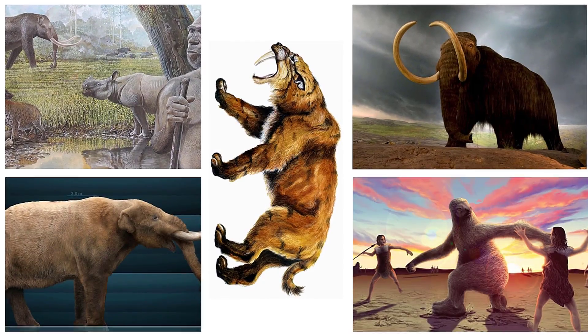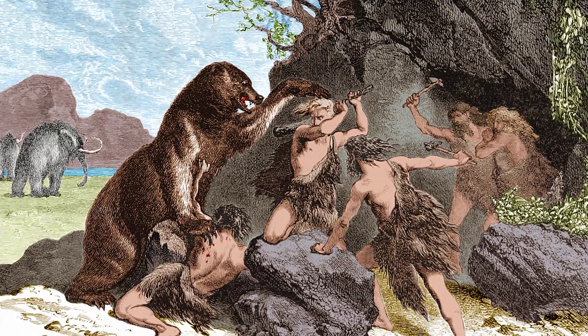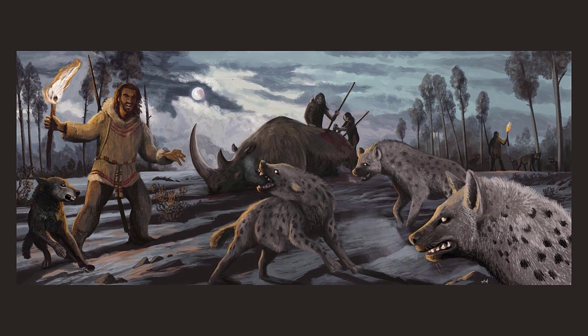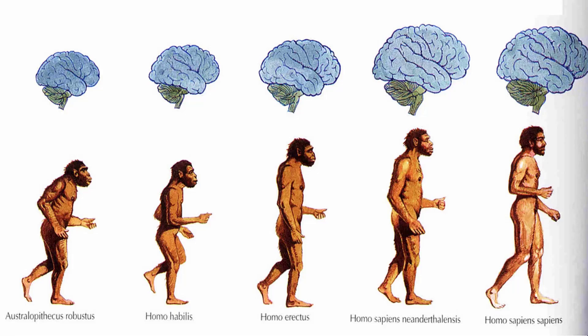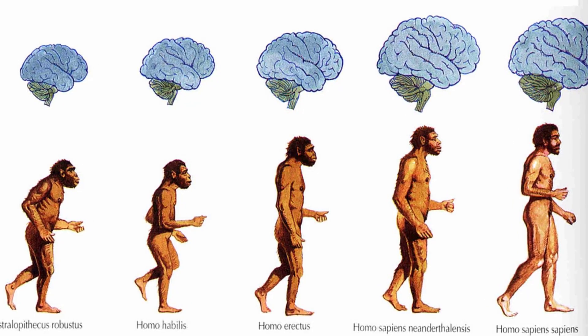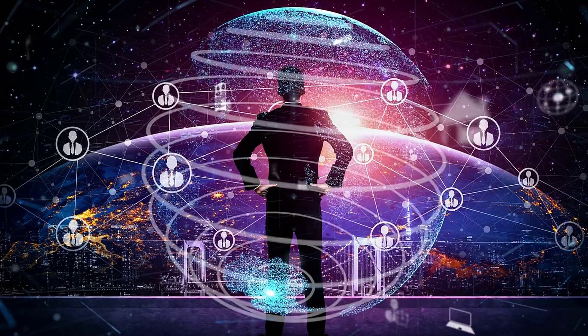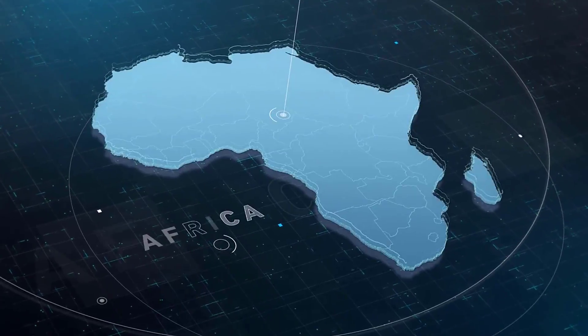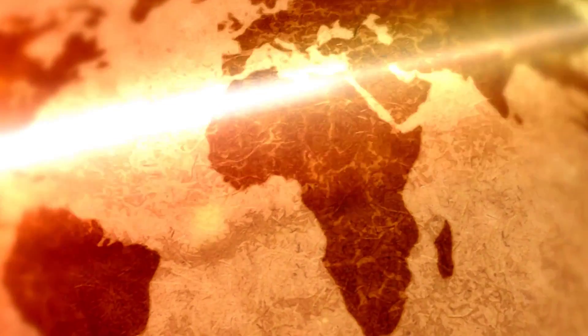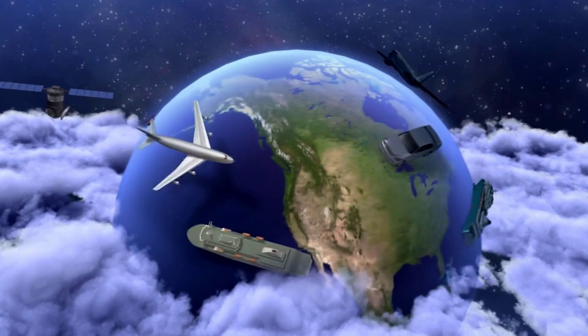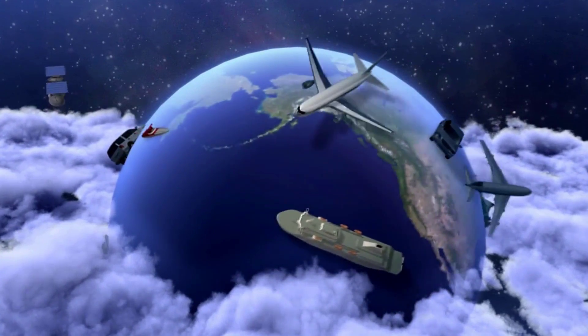There are several theories as to why these animals became extinct. One theory is that when humans came into contact with the megafauna, they hunted them to extinction. Yes, people like us survived the ice age. Our species, Homo sapiens, first appeared around 300,000 years ago in Africa and spread all over the world. Some populations remained in Africa during the ice age and did not feel the full effects of the cold, while others moved to other parts of the world, including Europe's cold glacial environments.